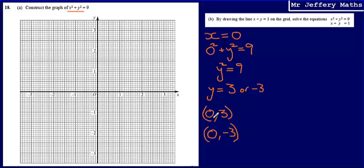So we can plot those points. So x is 0, y is 3, up the top there. Then x is 0, y is minus 3, just down the bottom there.